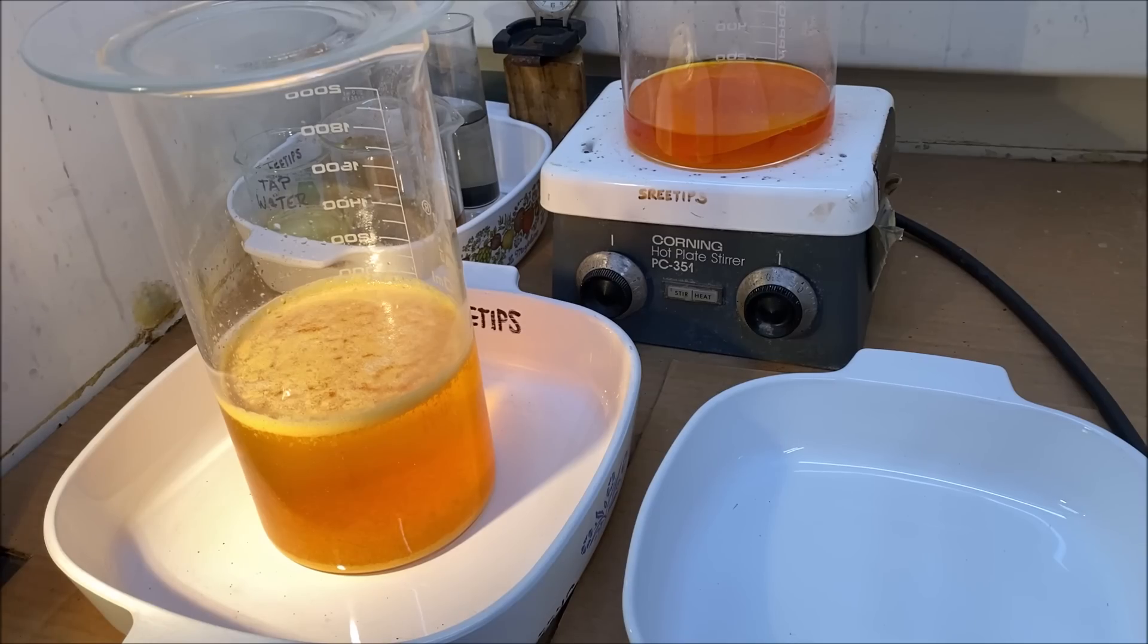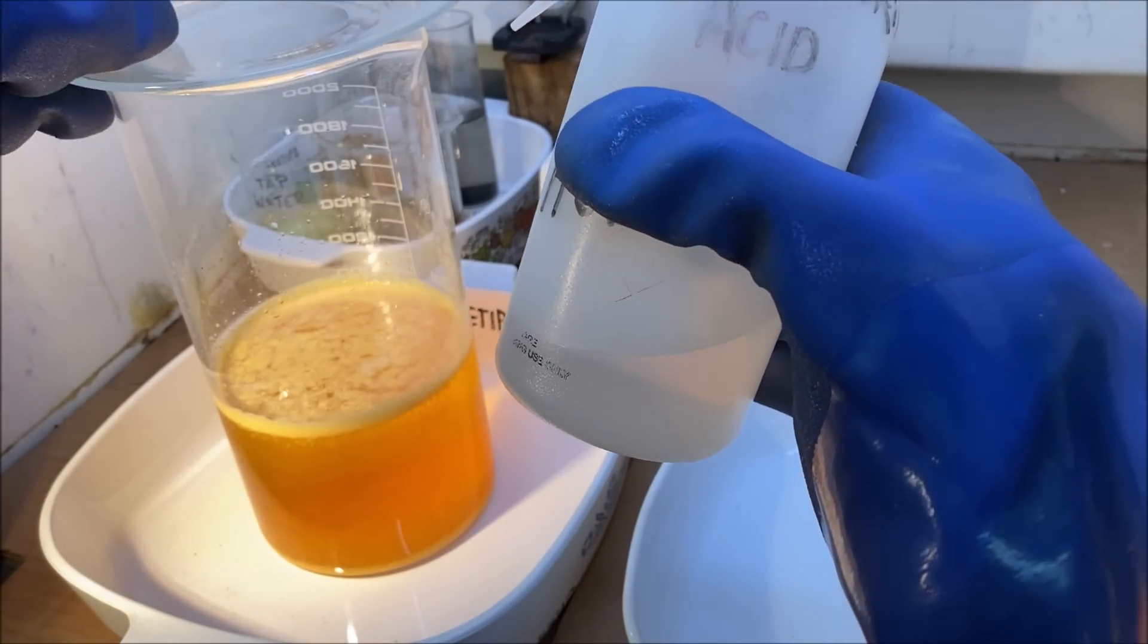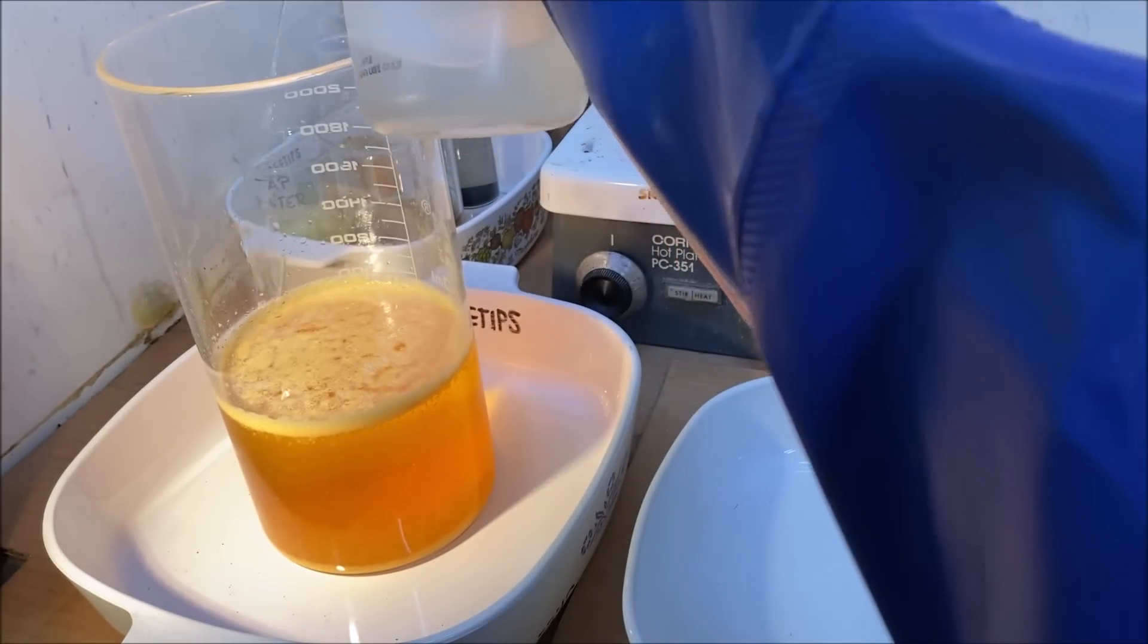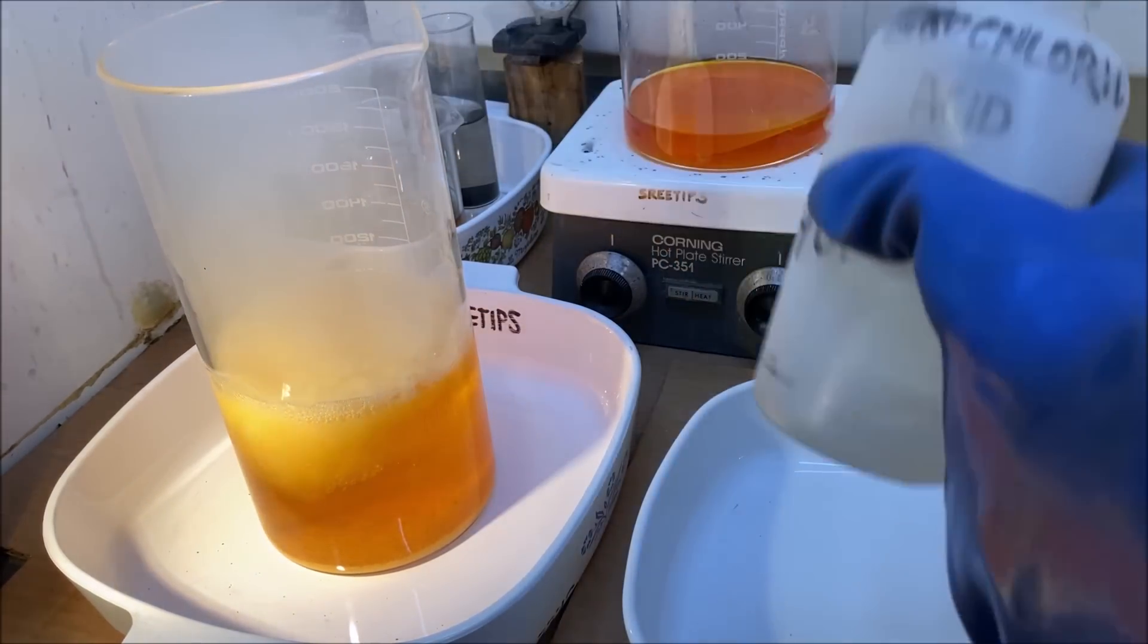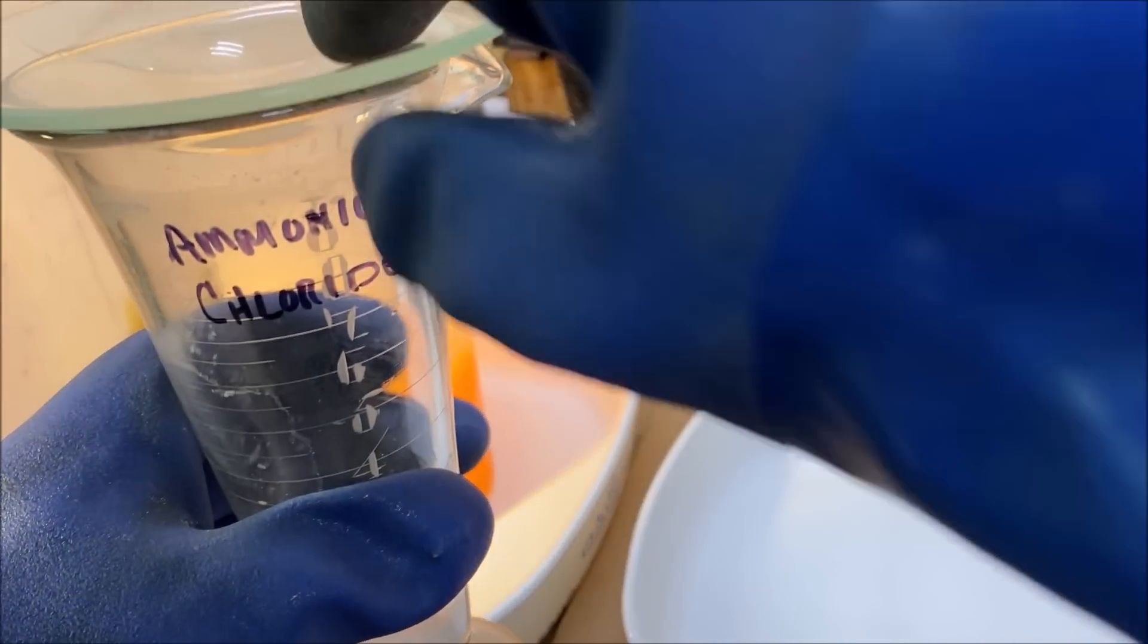Welcome back to part 6 of the Platinum Jewelry Refining Series. I'm going to start by adding a little bit of hydrochloric acid to this. I'm going to add a little bit more ammonium chloride.